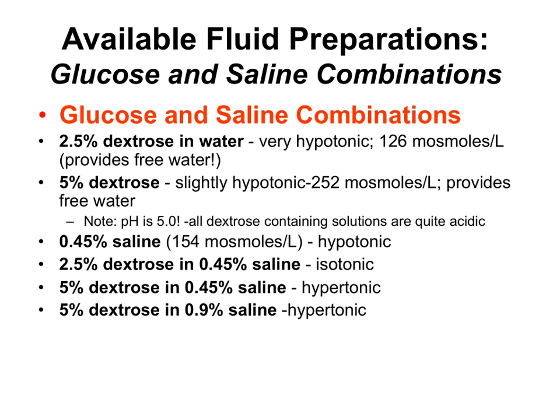5% dextrose and 0.45% saline is initially hypertonic, and then eventually when it's metabolized will become hypotonic. 5% dextrose and 0.9% saline is quite hypertonic and will eventually become isotonic. So you have to consider what happens to the animal initially — that affects the extracellular fluid — and then eventually, based on the metabolism of the dextrose.